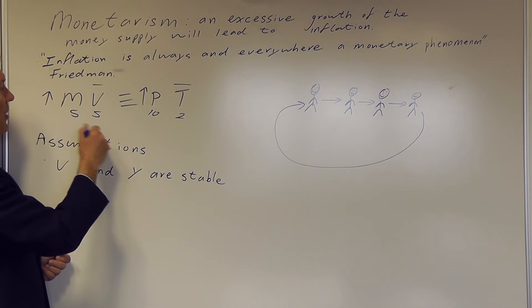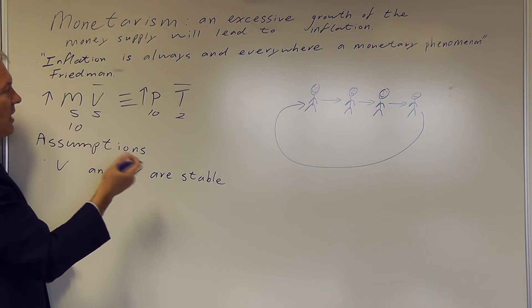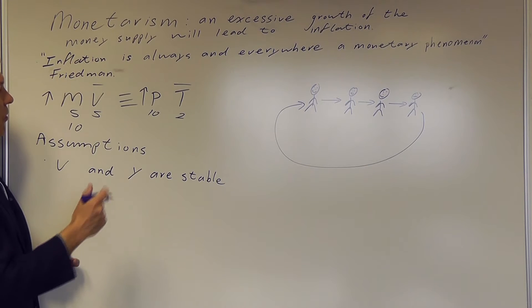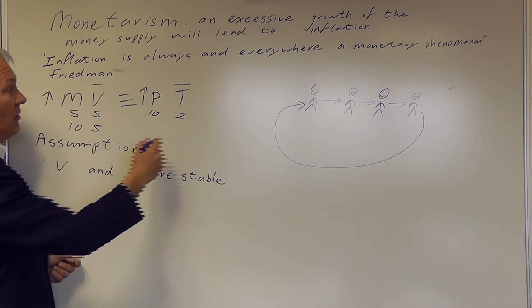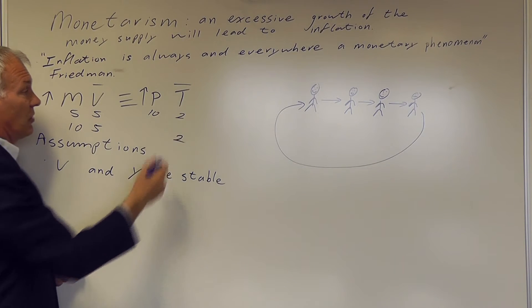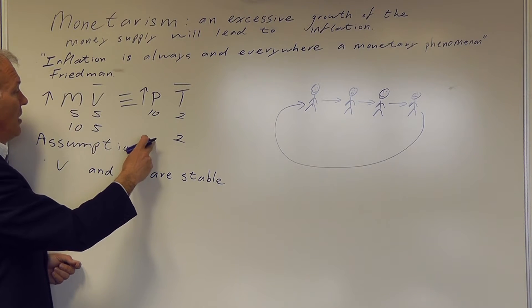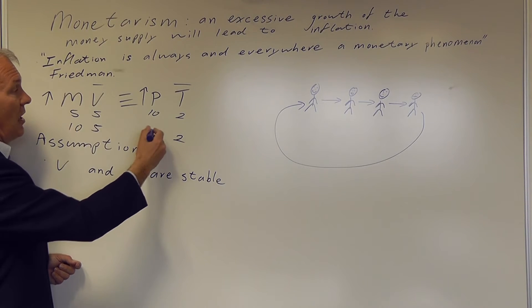And now say we double the money supply to £10. Then what's going to happen is that the velocity of circulation will stay constant at 5. The level of transactions is still 2. And, therefore, the price level is now going to increase.